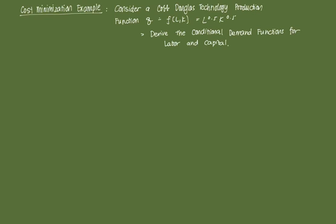In particular we're going to be using a Cobb-Douglas technology production function given as L raised to 0.5 K raised to 0.5, and we're going to apply our cost minimization process to derive the conditional demand functions for both labor and capital.